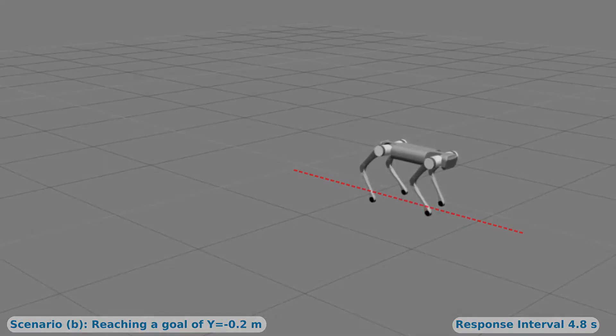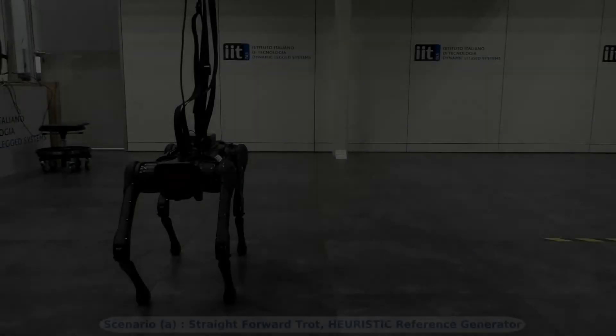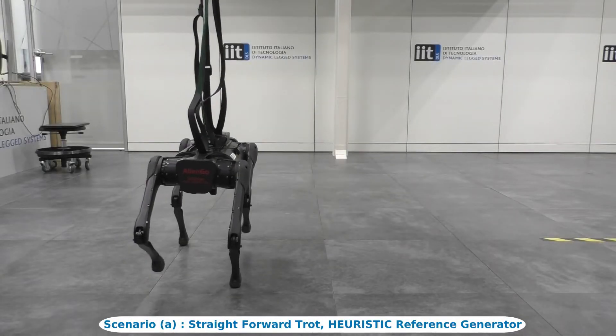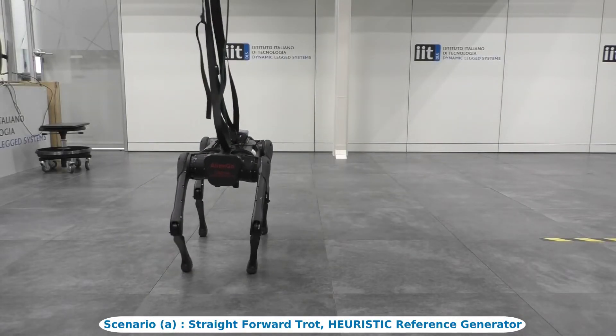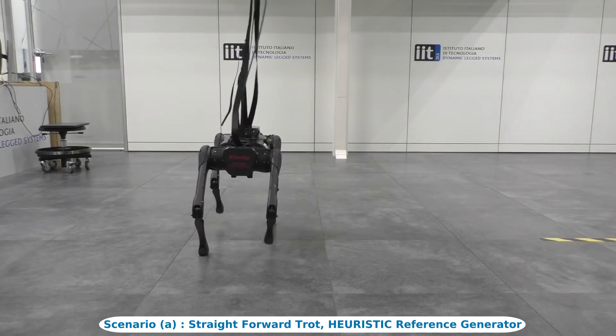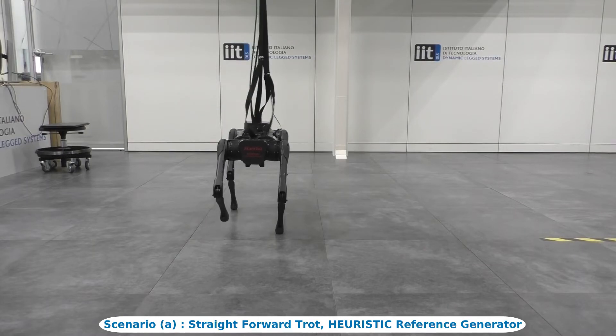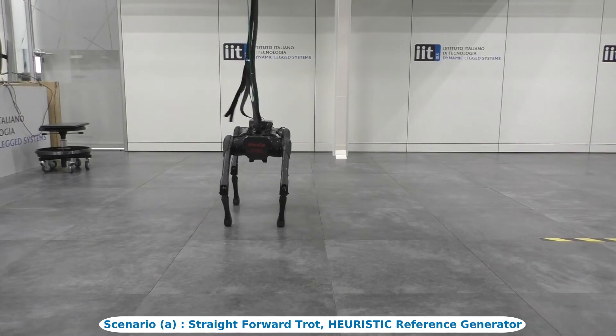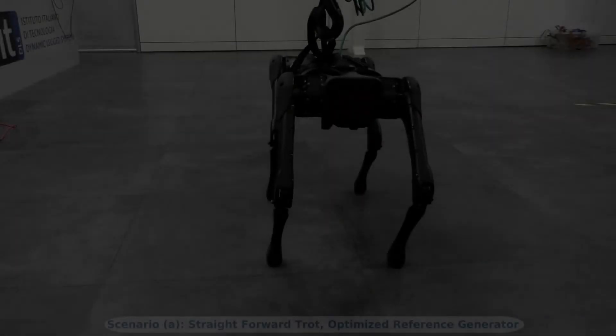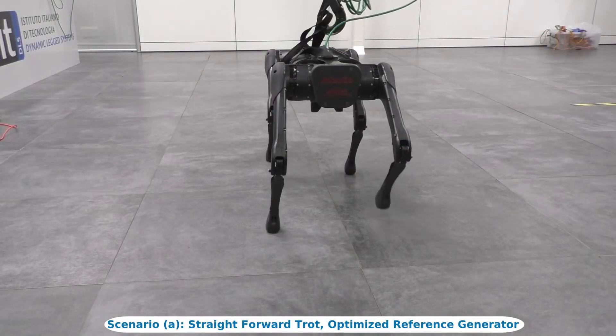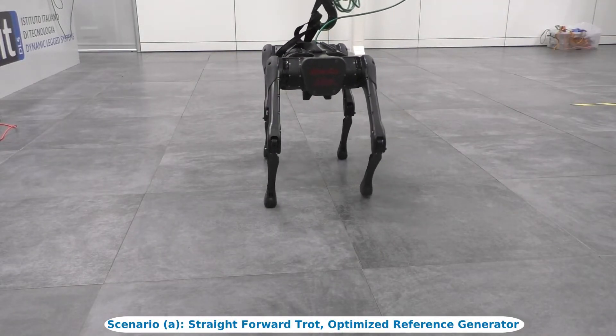As a first experiment, we test the NMPC keeping the status of the reference generator always equal to heuristic. The robot drifts laterally towards the right due to the unstable gait. An additional effort is required to recover from this undesired behavior by automatically changing the status of the reference generator from heuristic to optimized.